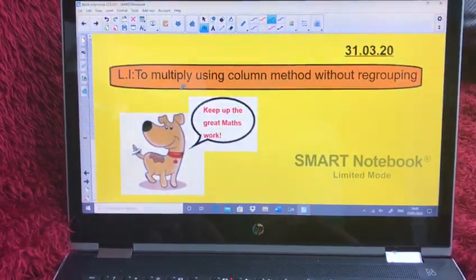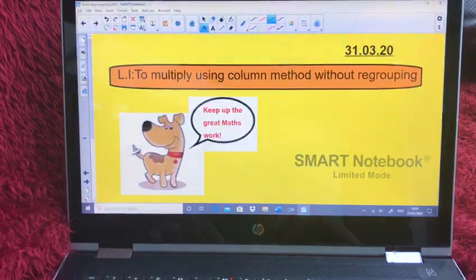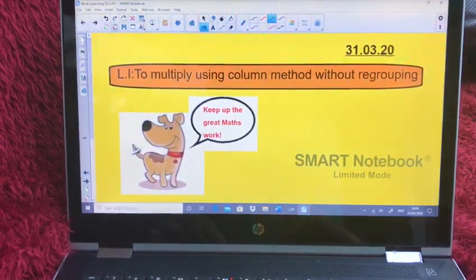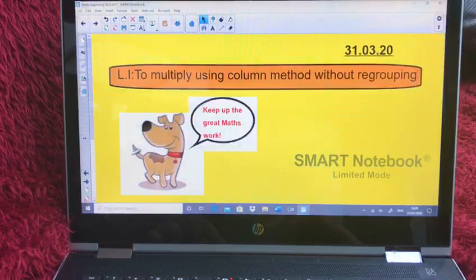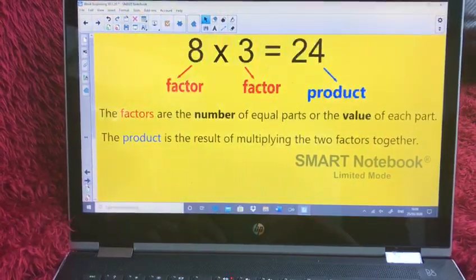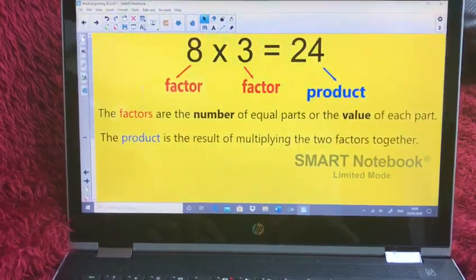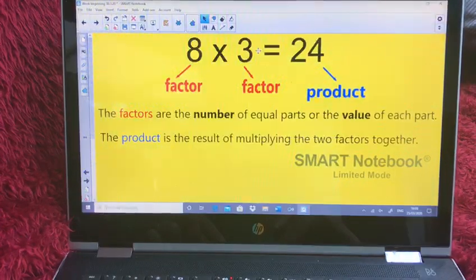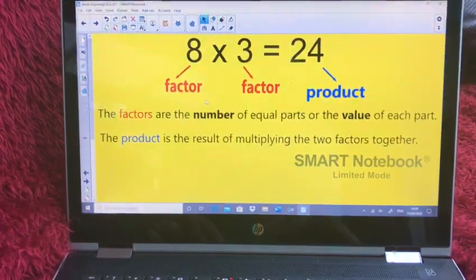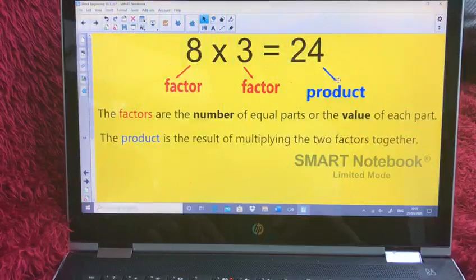Today's learning intention is to multiply using column method without regrouping. So before we start, we'll quickly recap on our mathematical vocabulary. You'll remember that the two numbers that multiply together are called the factors and the answer is called the product.